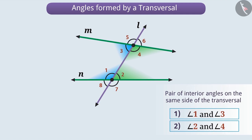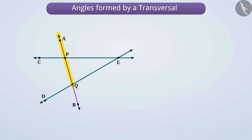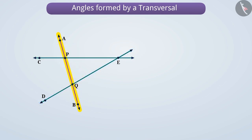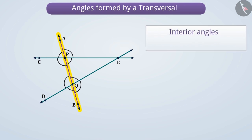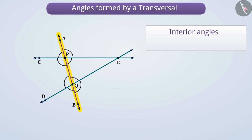Let us consider another interesting example to understand this. Here, line AB is intersecting line CE at point P and line DE at point Q, forming 8 angles. Can you find out the interior angles formed by the transversal AB? The interior angles are angle CPB, angle BPE, angle DQA, and angle AQE.